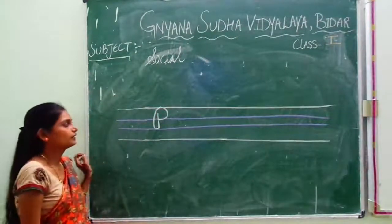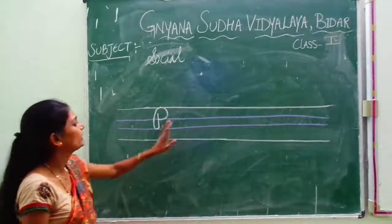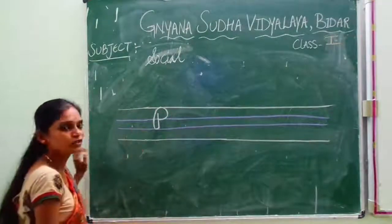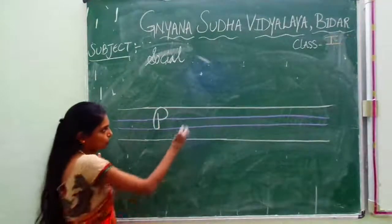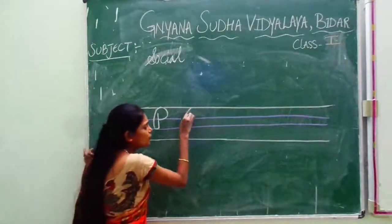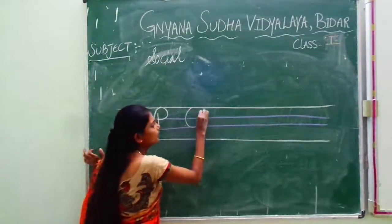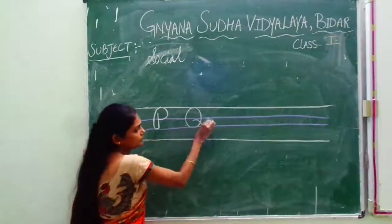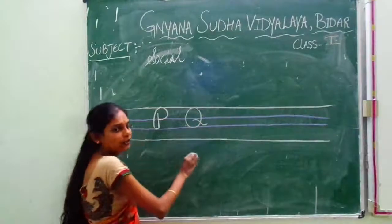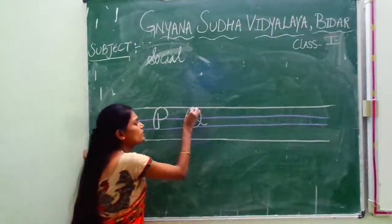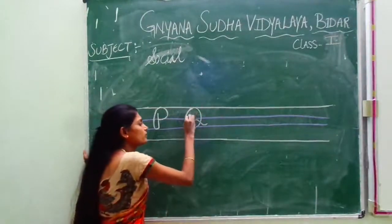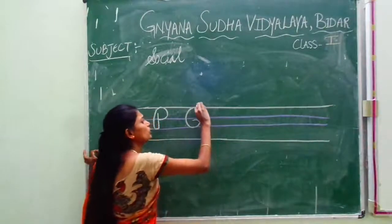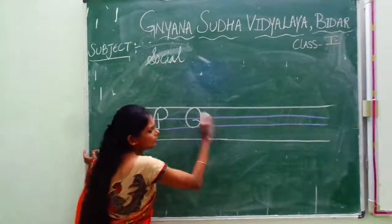Now then leave some space. What comes next? After P comes Q. So again touching three lines like this, make a circle. Then write like this — this is called Q. Once again I am showing you, see like this. This is called Q. Capital Q.